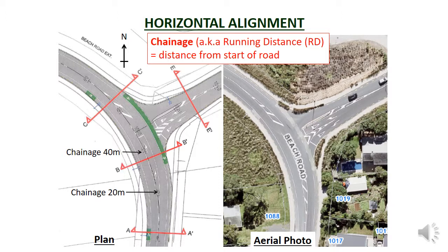You can view the full set of drawings on the Moodle site. I've added a north point at the top of the plan. This allows you to orientate the plan correctly. This is especially important on site as you need to read the plan the right way up. The horizontal alignment is concerned with where the road is actually located as well as the straights and bends that make up the road.